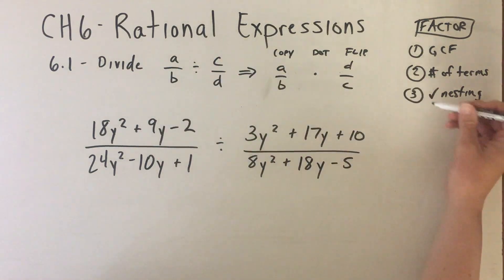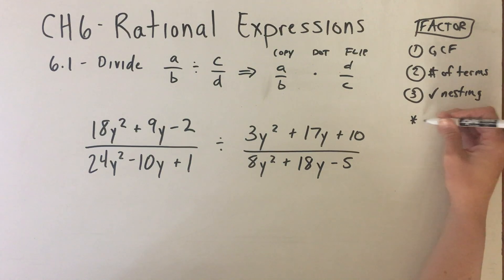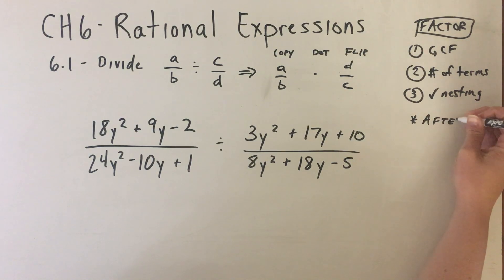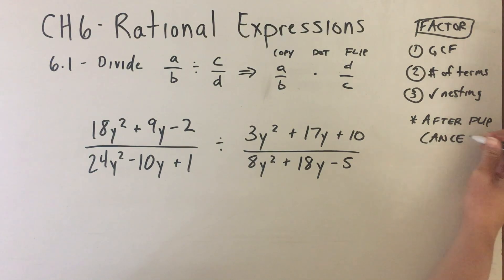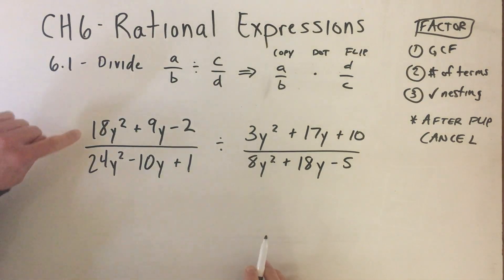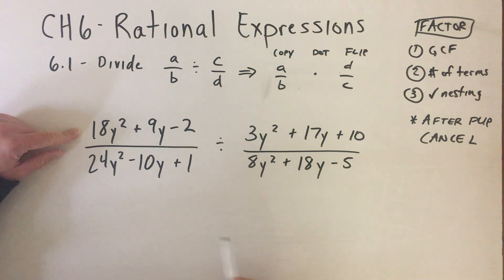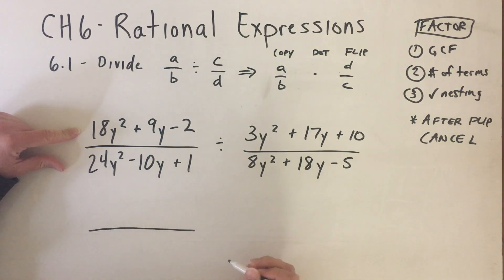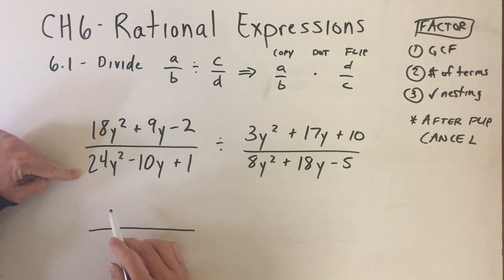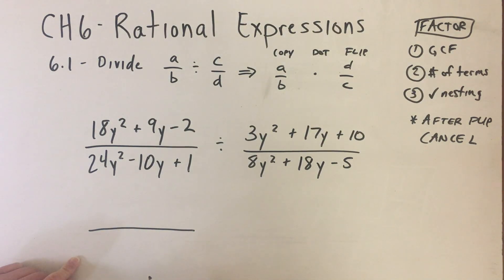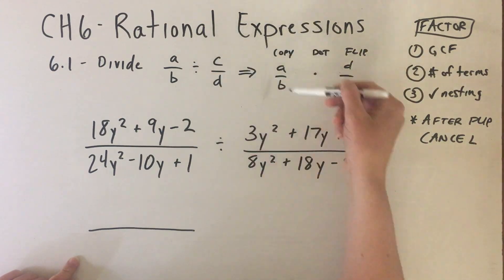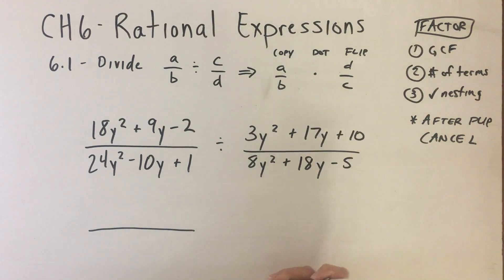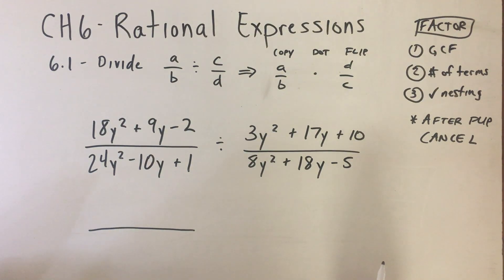After you flip, you can cancel — but what you should be thinking is: factor. When I factor 18y² + 9y - 2, I'm going to put those factors on the top. When I factor 24y² - 10y + 1, I'm going to put the factors on the bottom, because A stays here and B stays here. But when I factor C and D, I'm going to switch where their factors go. Starting with 18y² + 9y - 2, I'm going to check for a greatest common factor — there is not one.